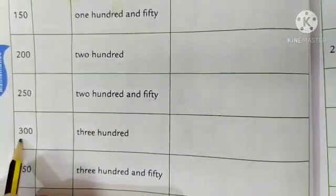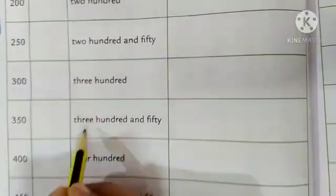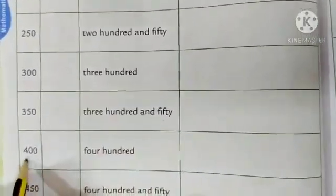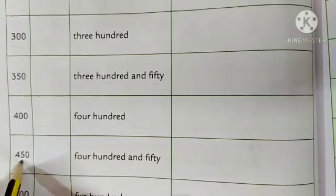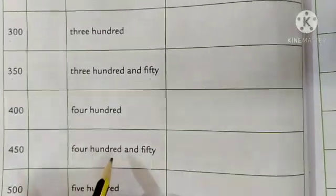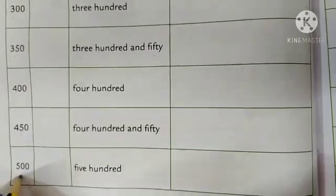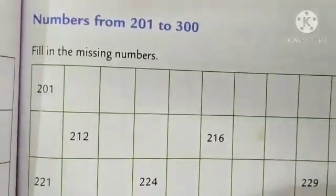Then, like this. This is 300. Then, this comes 350. 300 and 50. 400. 400 and 50. Then, 500.